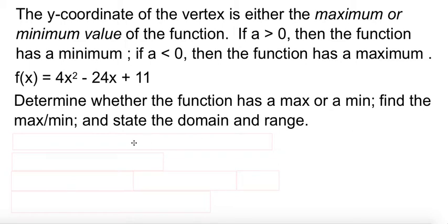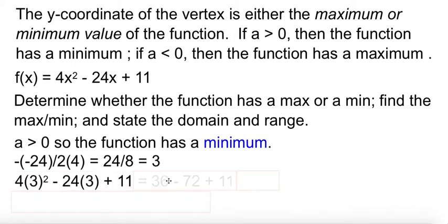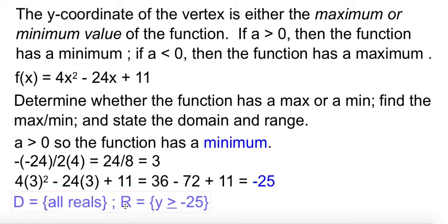Well, first, let's figure out if we have a max or a min. We look at a. a is 4, which is positive. So the function has a minimum. To find it, we need to find the vertex. So we do our opposite b over 2a. Plug that into the formula, into the function they gave us. Do a little arithmetic, and we find out that the minimum is negative 25. For a parabola, your domain is always going to be all real numbers. Your range, since it's a minimum, that's the lowest value. Everything else is above that. So y is greater than or equal to negative 25.